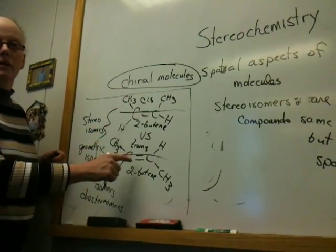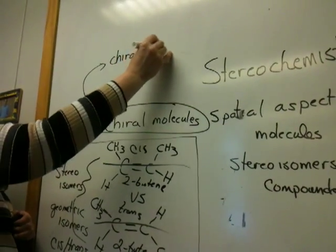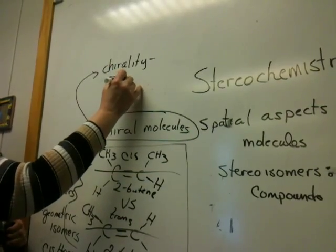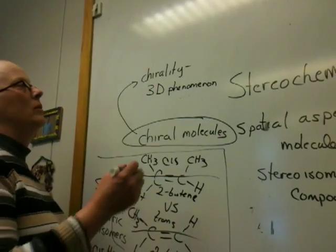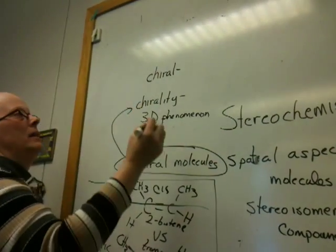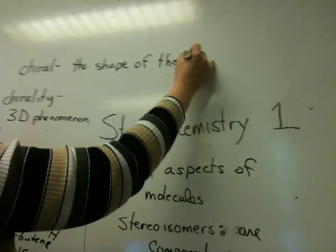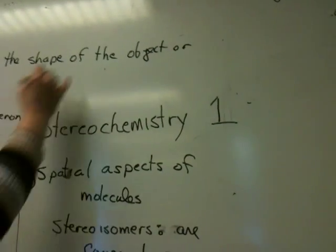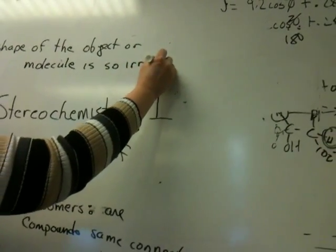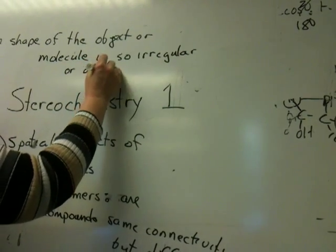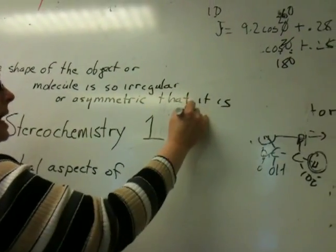These molecules are not chiral molecules. Chirality, or chiral molecules — chirality is a property — it is a three-dimensional phenomenon. We have chirality, or something is chiral, when the shape of the object or molecule is so irregular or asymmetric that it is non-superimposable on its mirror image.